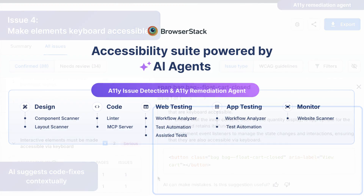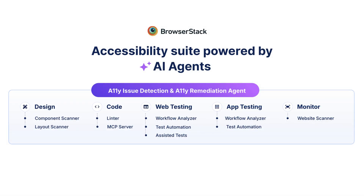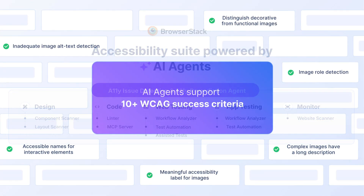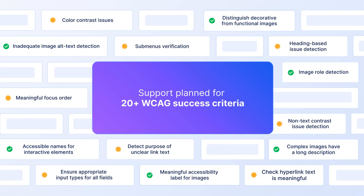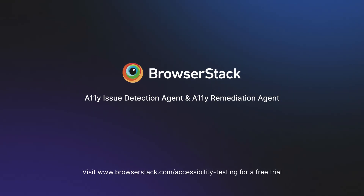AI agents now power BrowserStack's end-to-end accessibility suite, enabling automated, accurate, and scalable testing. AI agents are being developed to accurately detect issues like no other tool in the market and already provide fixes for 10-plus WCAG success criteria. With support planned for more than 20 WCAG success criteria, issue detection and remediation agents will help you drive accessibility testing across SDLC with minimal human intervention and WCAG expertise.